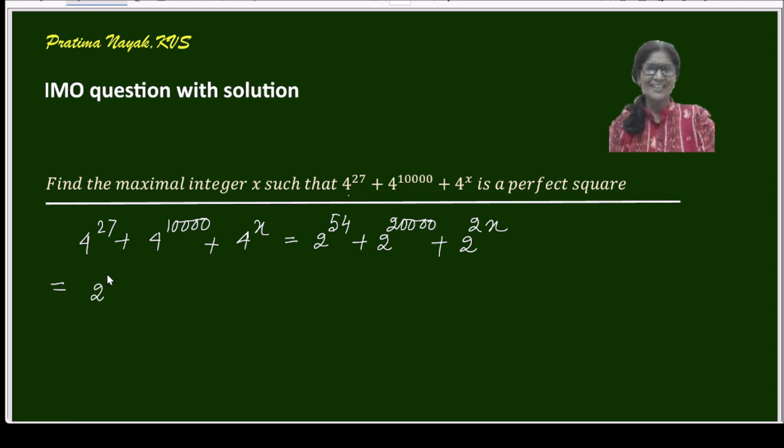Taking 2 to the power 54 outside, I'll get 1 plus, now 20000 minus 54 is 19946, so it will be 2^19946 plus 2^(2x-54).